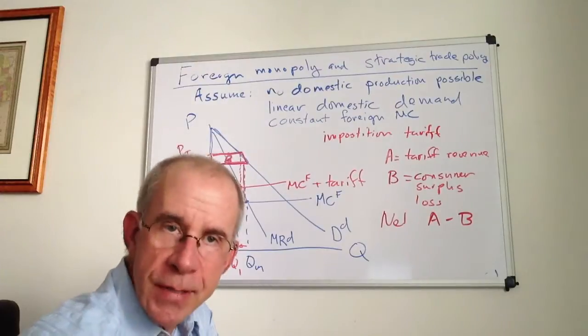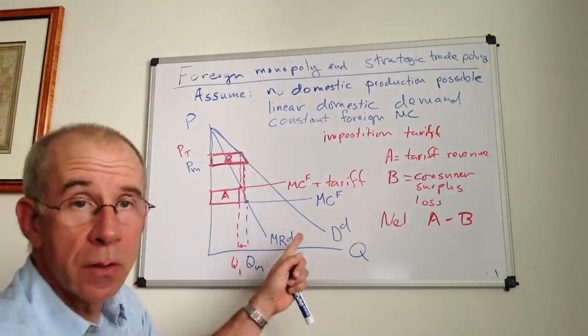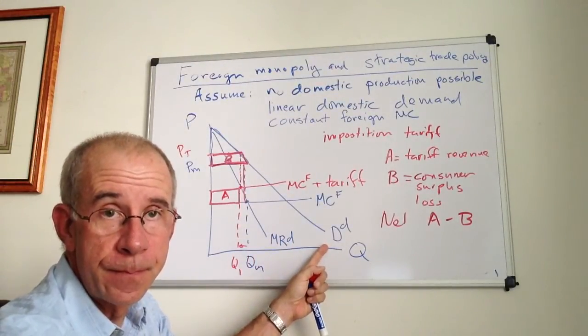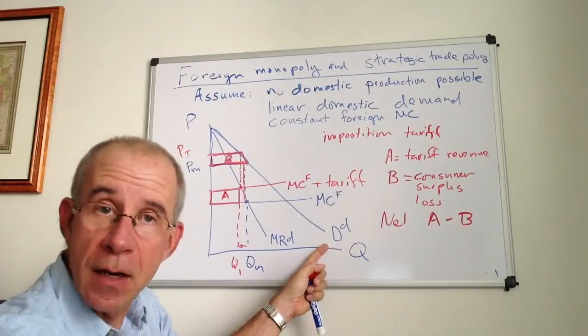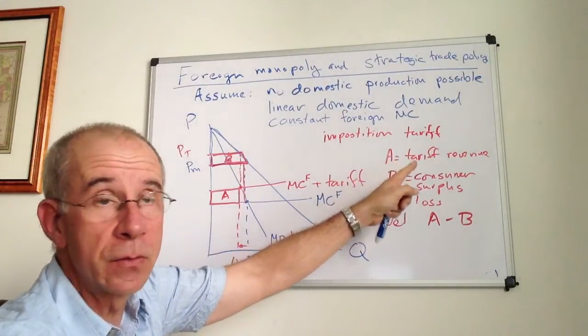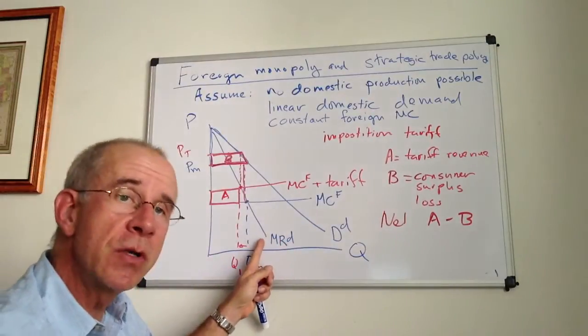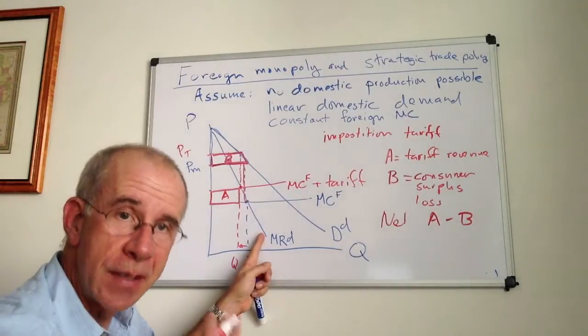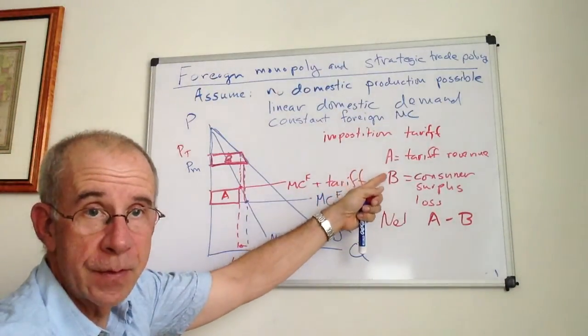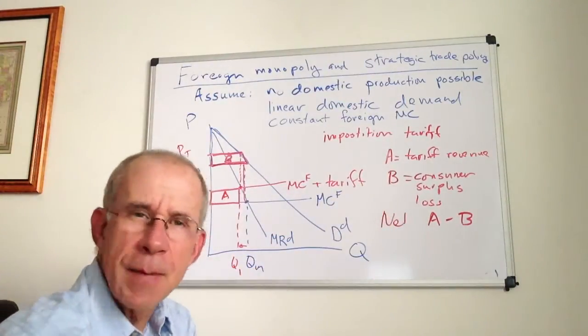It turns out, as long as the marginal revenue curve is steeper than the demand curve, then the tariff will actually cause greater benefits from the revenue than from the consumer surplus loss. So let me repeat that. As long as the marginal revenue curve is steeper than the demand curve, the benefits from the tariff revenue exceed the losses to consumers. So let's think about what that means.